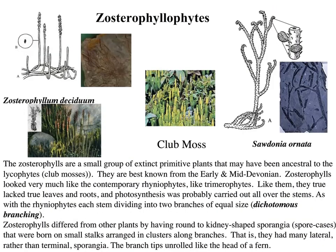Zosterophyllophytes are the next group, and we're starting to get a little bit more evolutionarily advanced. If you look at these, they look a little bit more complex than what we've seen before. There's a hypothesis that they're actually related to plants that exist today called club moss. We're starting to get a little more evolutionarily complex and they might even have a precursor to leaves — it looks like they had some scales according to the fossil record, which might eventually evolve into leaves.